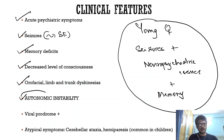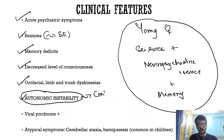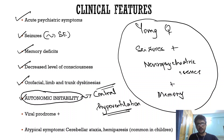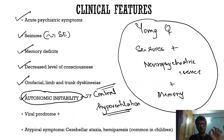Autonomic instability is very important and is one of the important causes of death in this condition. It can cause central hypoventilation so severe as to warrant prolonged mechanical ventilation. There are two important causes of death: number one is status epilepticus, and number two is severe autonomic instability causing central hypoventilation requiring mechanical ventilation.